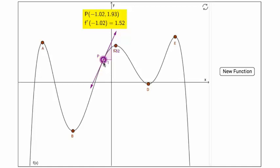Where point P is located right now, the derivative's value is equal to 1.52. As I drag point P closer to the local extrema, the derivative becomes zero. The slope of that tangent line is zero.